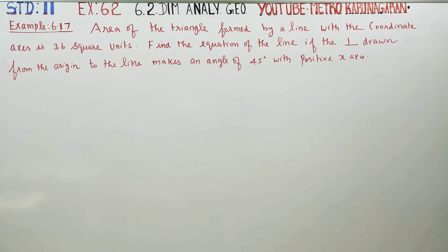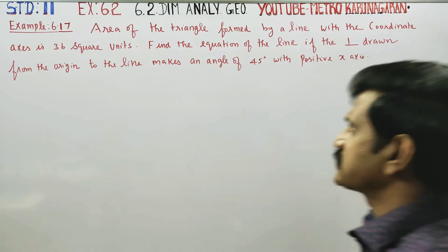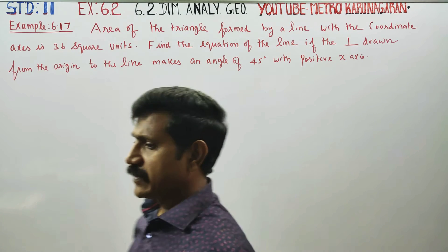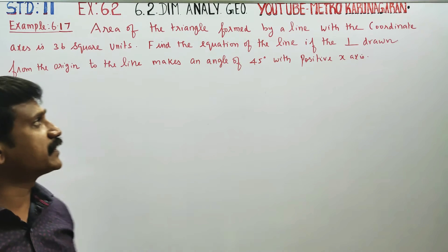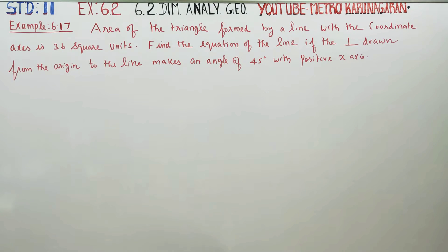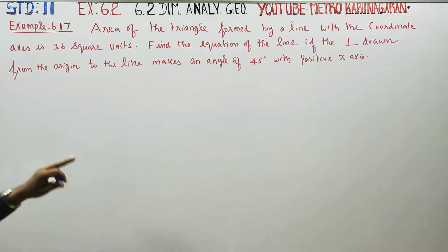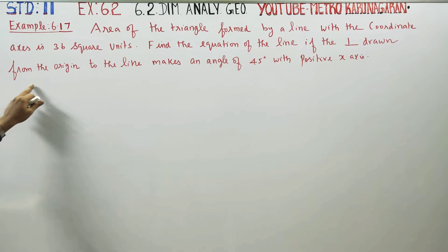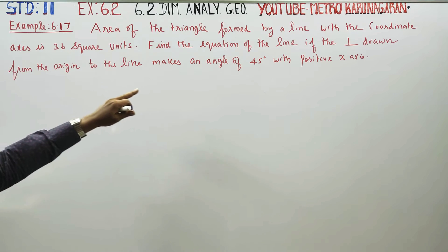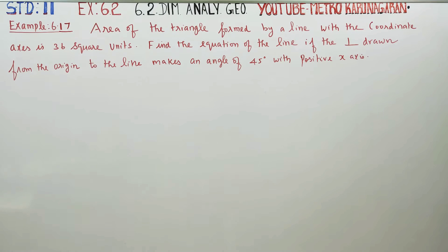Dear Levan Standard students, I am Metro Karanagaran. In example 6.17, the area of the triangle formed by the line with the coordinate axis is 36 square units. Find the equation of the line, if the perpendicular from the origin to the line makes an angle of 45 degrees.